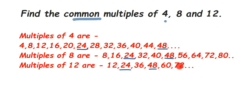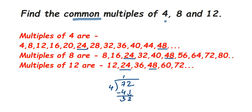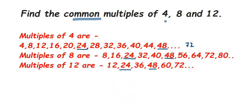72 is a bit further along — we'd need to go up to 72 in the multiples of 4 to confirm. So let's check: divide 72 by 4. 4 times 18 is 72, so 72 is indeed a multiple of 4. That means 72 will appear in the multiples of 4 list if you keep multiplying. So we have three common multiples.